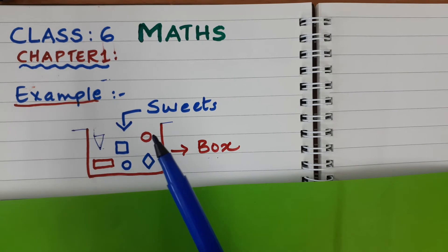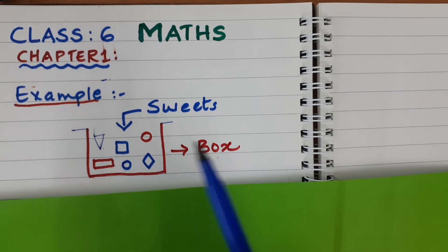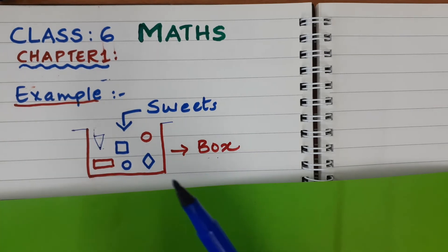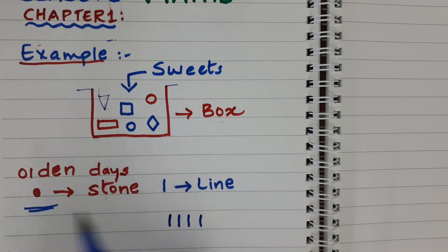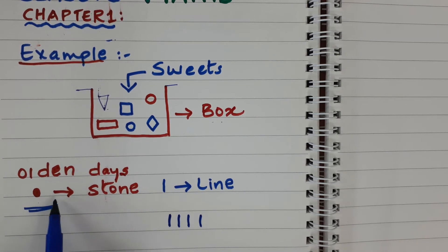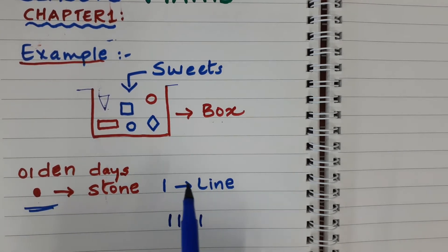For example, a farmer wants to count how many sheep he has, how many hens he has. How did those people count things? In olden days, people used stones and lines to count things.